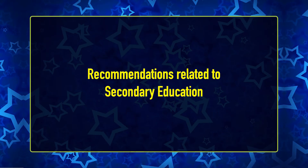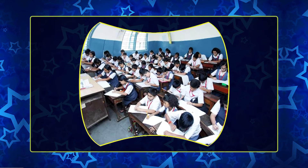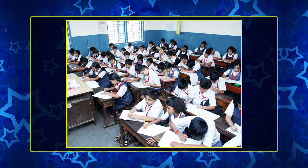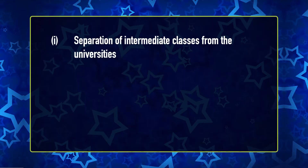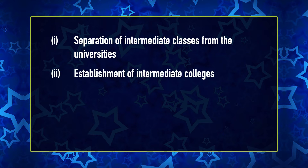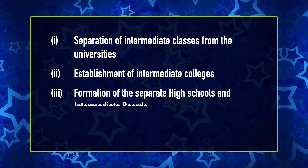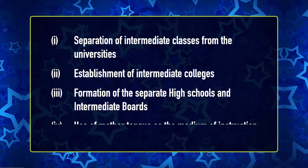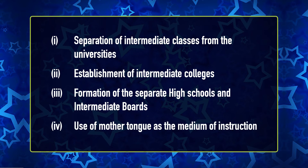Regarding recommendations related to secondary education, the Commission recommended that reforms at the secondary education stage were essential for the improvement of university education. In this regard, it made the following recommendations: first, separation of intermediate classes from the universities; second, establishment of intermediate colleges; third, formation of separate high school and intermediate boards; and fourth, use of mother tongue as the medium of instruction.